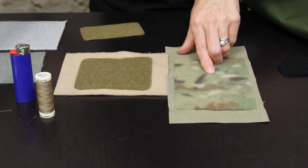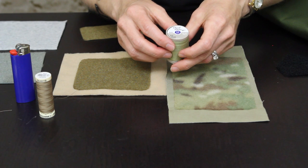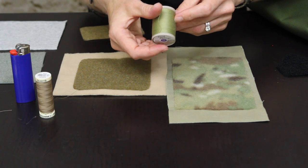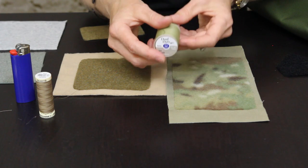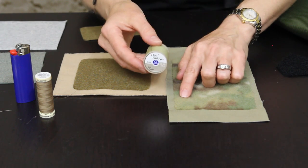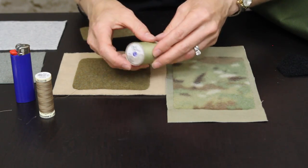So for the multicam stitching I used a Coates and Clark brand thread. It's dual duty and it's also a heavy duty thread, 100 percent polyester and this color number is 8450. So it blended really well with the shades of green in the multicam loop.